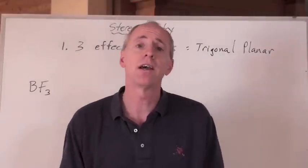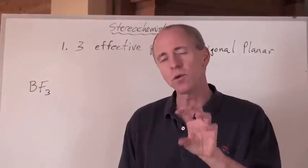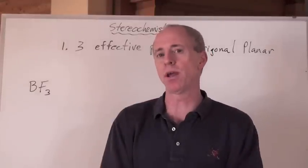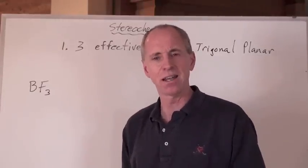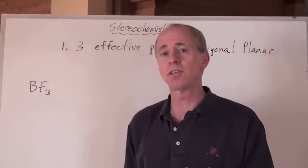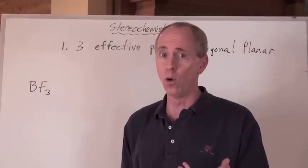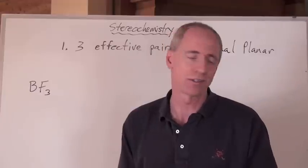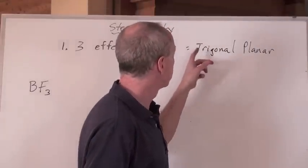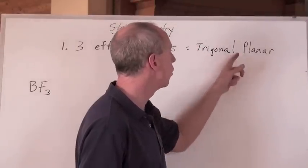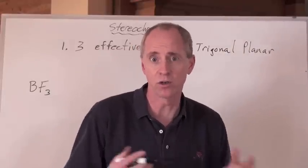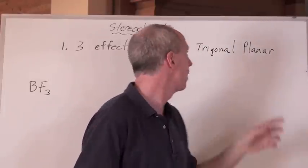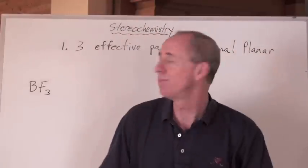So you go from four effective pairs, and now how about if the central atom, and it's always the central atom that we put the shape around, if the central atom has three effective pairs, how do you get that? Remember, multiple bonds can count as one, or there can be exceptions, so watch this. That's called trigonal or trigonal planar shape. I don't care how you pronounce it, I usually say trigonal, trigonal planar. Whatever you want to say.